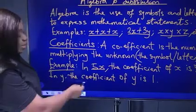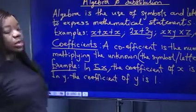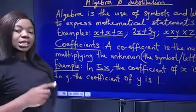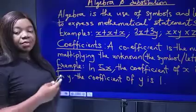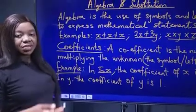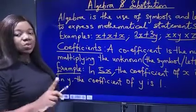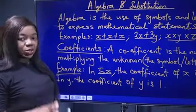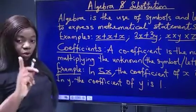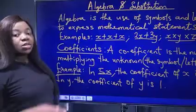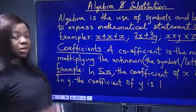In y, the coefficient of y is 1 because y times 1 is y. For example, if 5 times 1 is 5 and 7 times 1 is 7, so y times 1 is y. So the number multiplying y is 1, and that 1 is called the coefficient of y.